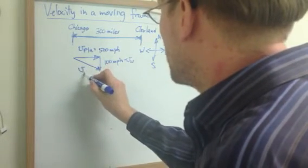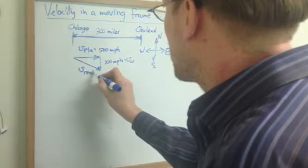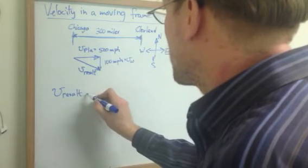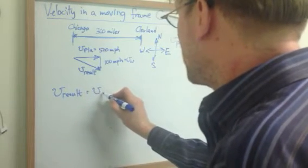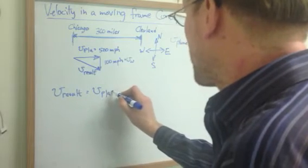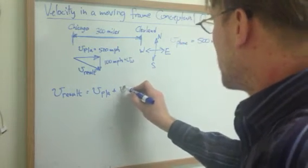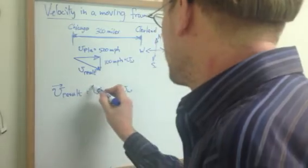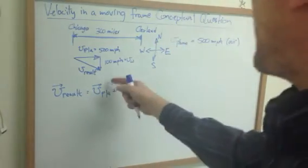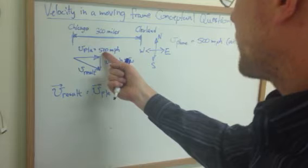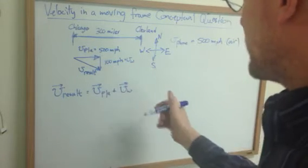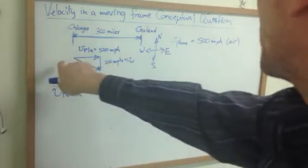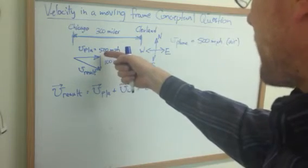So I'm going to say the resultant velocity is equal to the velocity of the plane going through the air, plus the velocity of the wind, or the velocity of the air that he's in. And if this is a vector equation, these don't just simply add up. You don't simply say 500 plus 100 equals 600. Because this is 500 miles per hour east, and this is 100 miles per hour south.